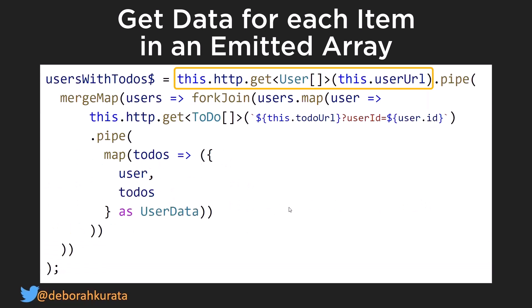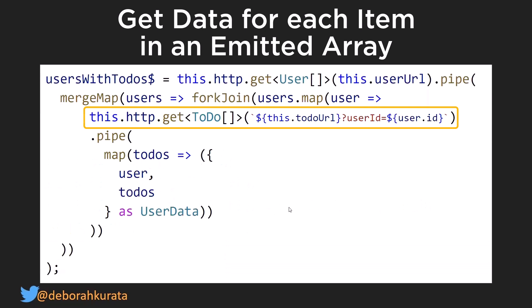Here I'm getting all of the users and piping it through with a merge map. I want merge map for performance — this is the best practice of using merge map to get these to run concurrently and as quickly as possible, because I don't necessarily care about the order of these operations. I can sort it alphabetically or whatever after the fact. Then here I'm using fork join.